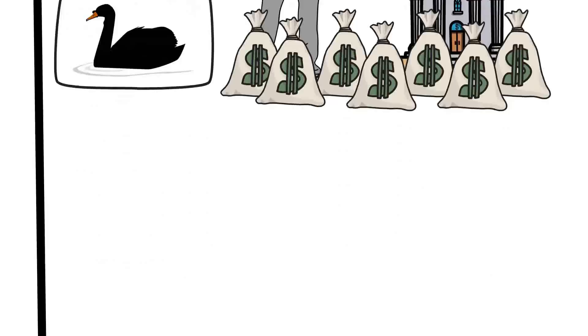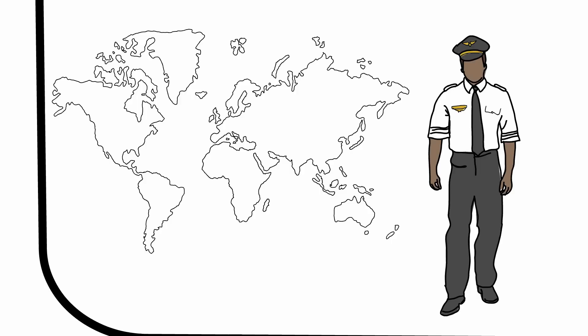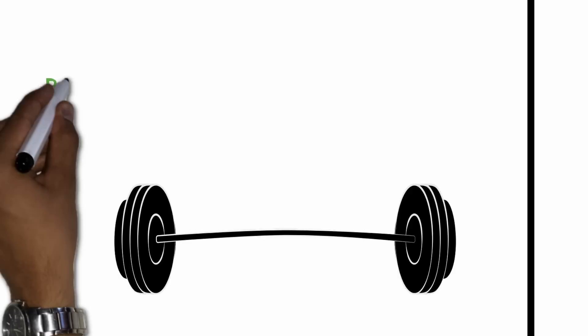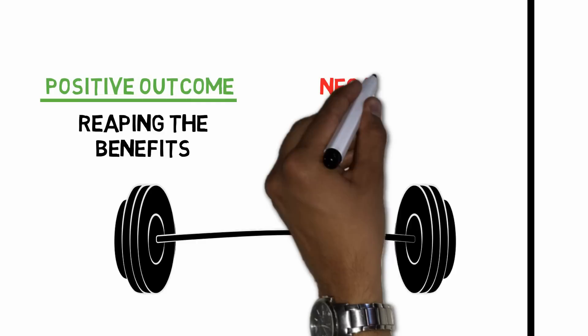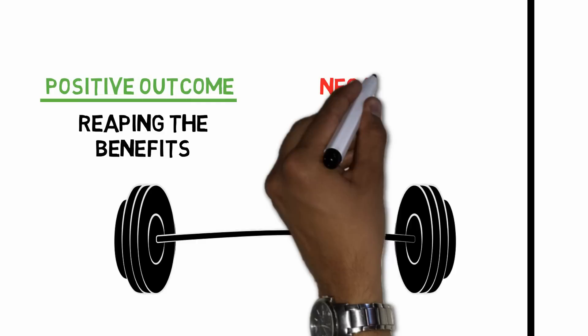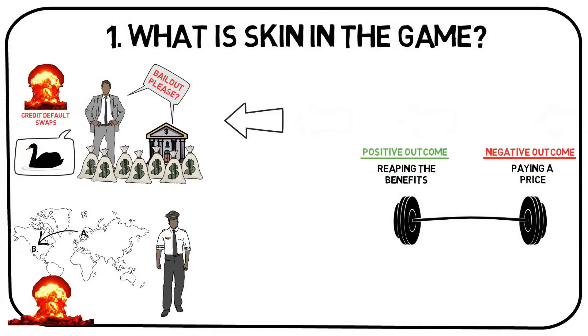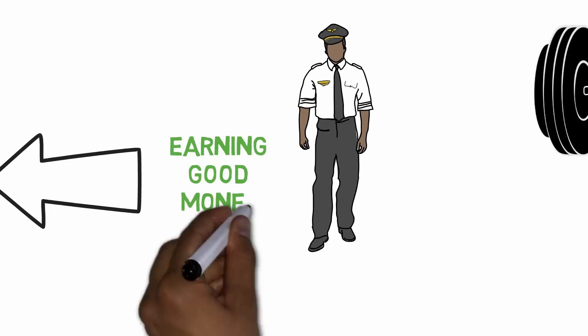A pilot is working for an airline company. He has a pretty good salary and his work revolves around taking people from point A to point B in the safest and quickest manner possible. He knows that if anything were to happen to his customers, i.e. the passengers, he would literally go down with them as well. Skin in the game is about symmetry: if you're able to reap the benefits of a positive outcome of an event, you must also share the harm and pay a penalty if something goes wrong. This risk shouldn't be possible to transfer to others. The pilot has skin in the game — he earns good money for his task, but should he fail, he will pay a penalty and this risk is not transferable.